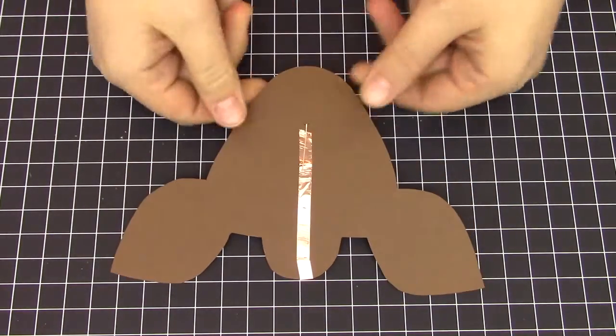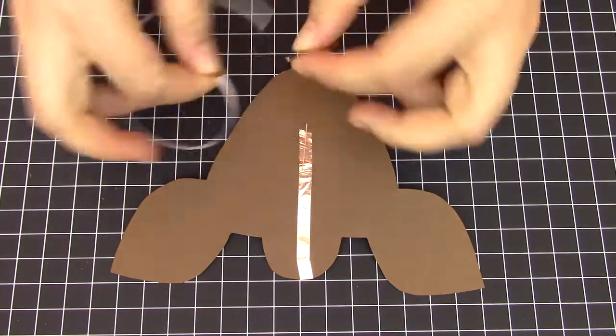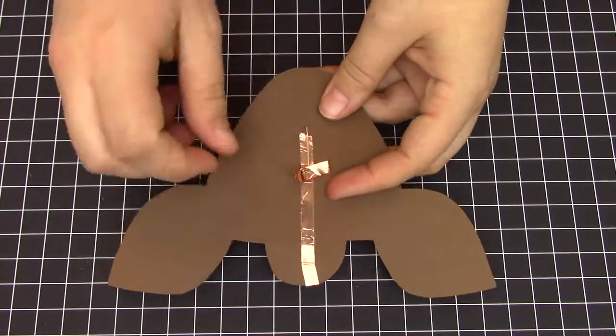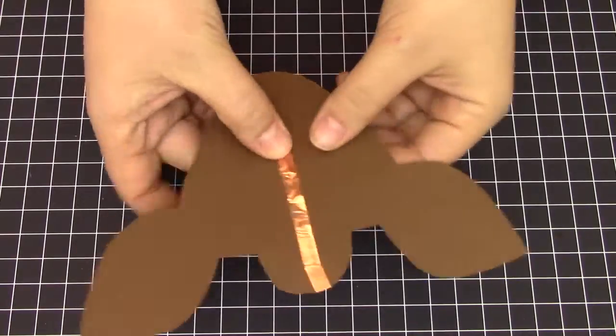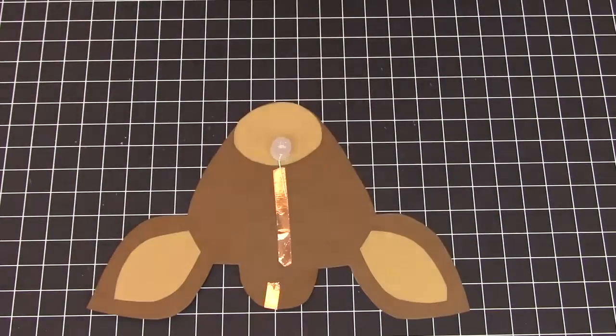Next, secure your LED legs by taking a small half-inch strip of copper tape and placing it over the leg, making a nice secure copper sandwich. Repeat this on both sides of your reindeer.